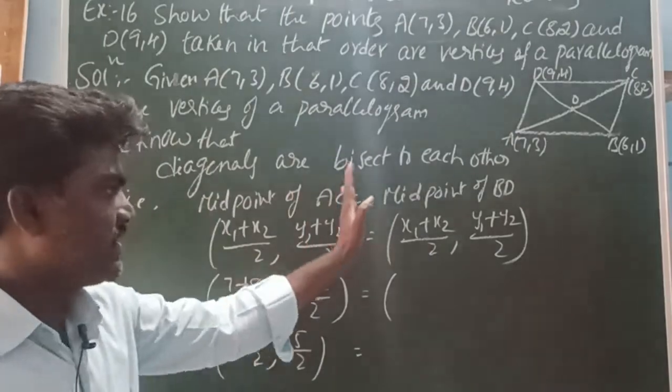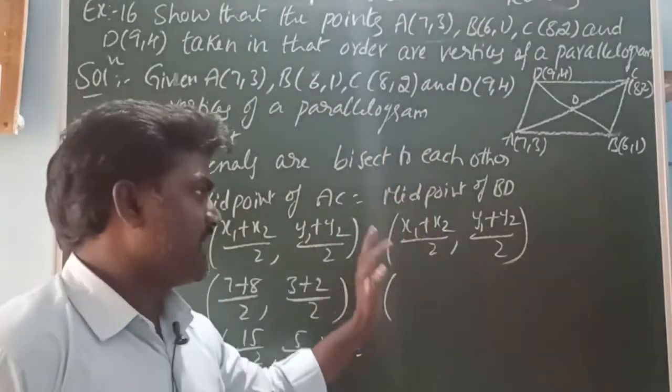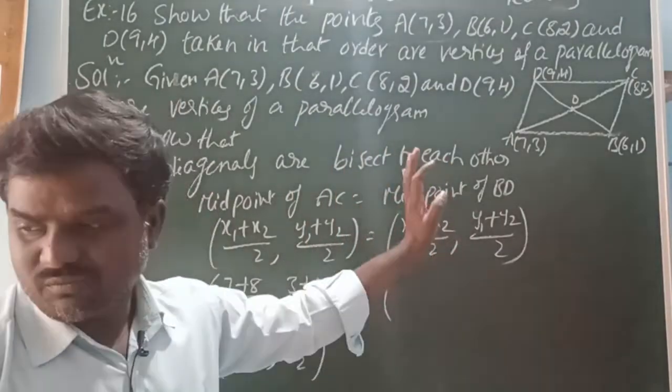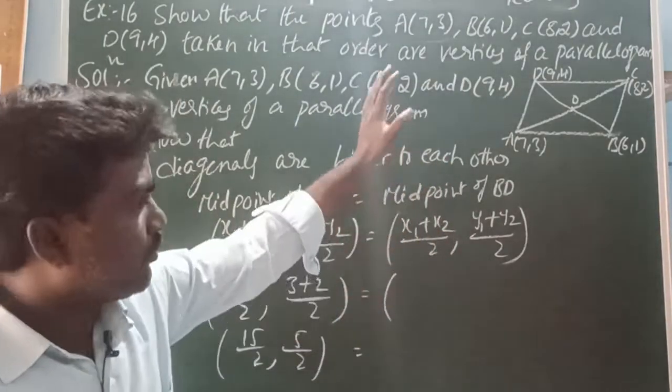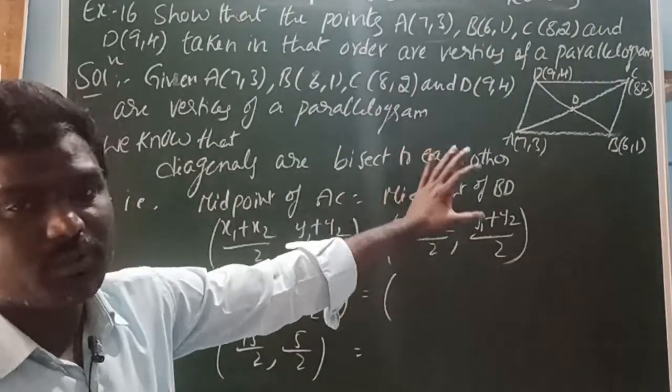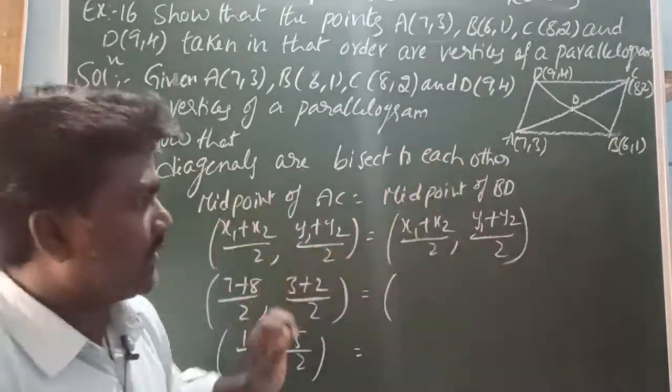The midpoint of AC and midpoint of BD are the same. Therefore, the four vertices form a parallelogram.